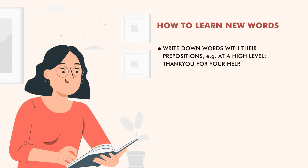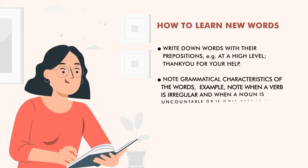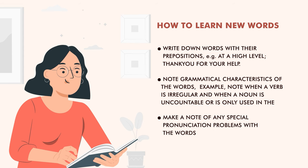Write down words with their prepositions at a high level: 'Thank you for your help,' 'act for.' With vocabulary you will also get to know the grammar and the pronunciation. Then note the grammatical features of words — for example, when the verb is irregular, like 'gone'; when the noun is uncountable, for example 'music'; or a noun used only in the plural, for example 'scissors' or 'trousers.' You also have to make a note of any special problems with the words. So these are the ways that you learn new words.